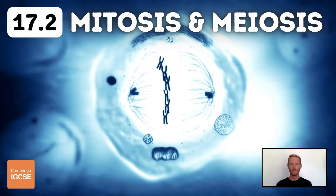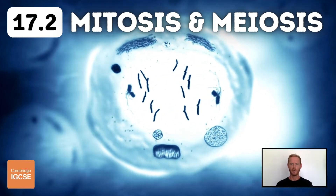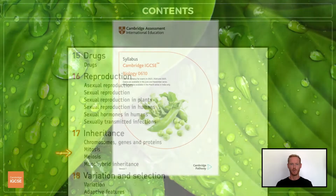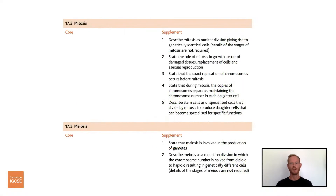Hello and welcome to another complete Cambridge IGCSE biology lesson, where you'll learn absolutely everything you need to know on topics 17.2 mitosis and 17.3 meiosis. As always, we'll be following the Cambridge syllabus exactly and we'll cover absolutely everything you need to know for your final exam.